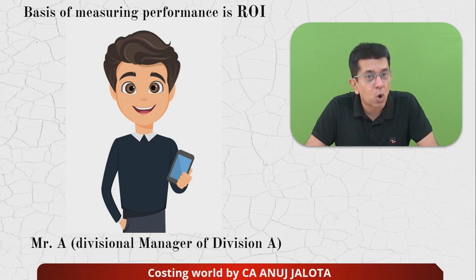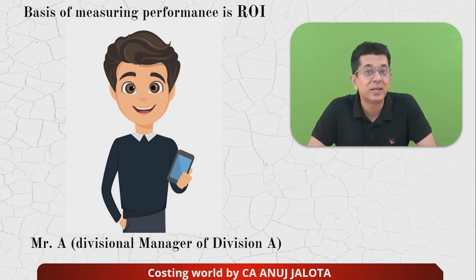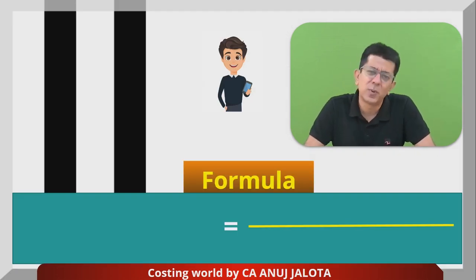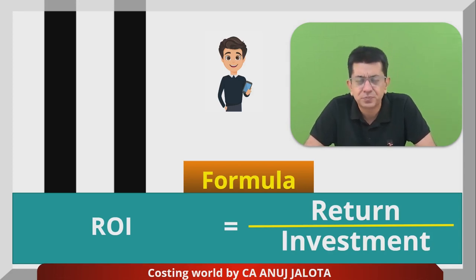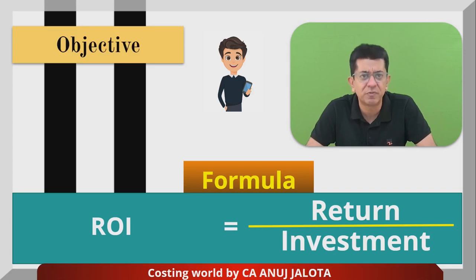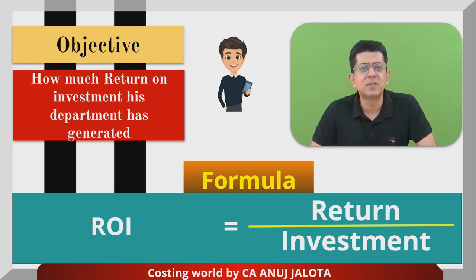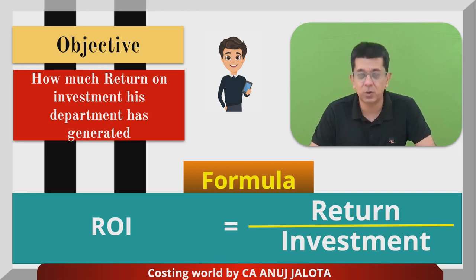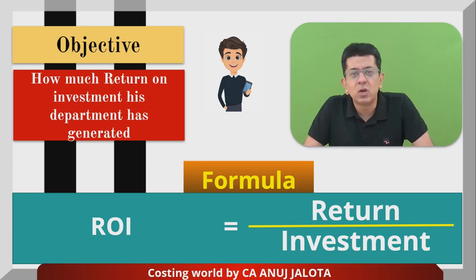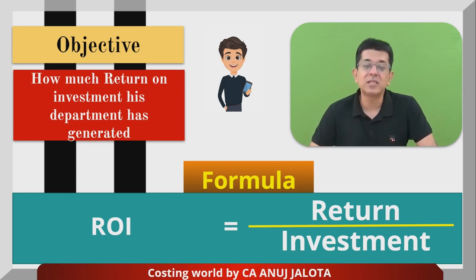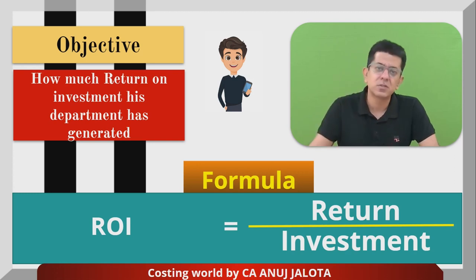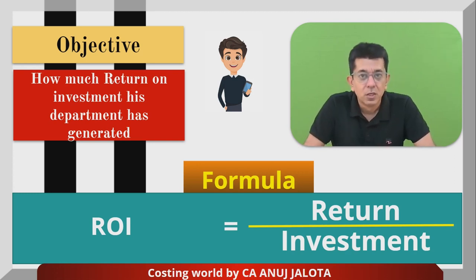So think about what Mr. A will be doing — he will always want to accept those projects which give him a higher ROI. How do you compute ROI? It is simply return divided by investment. The basic objective is to find out how much return his department has generated. Returns means profit, which is sales minus cost. So every manager evaluated based on ROI will have three things in mind: first, increase sales; second, decrease cost — return will automatically increase; and third, reduce the investment.